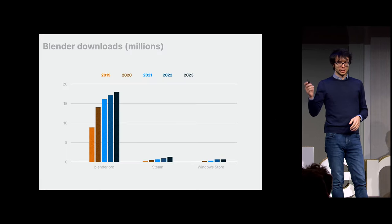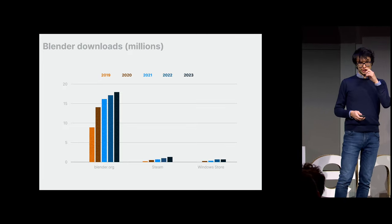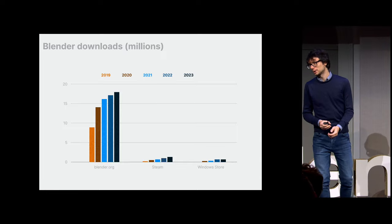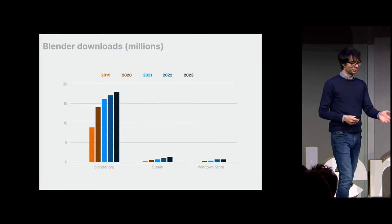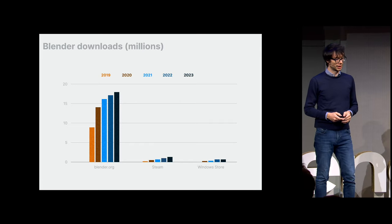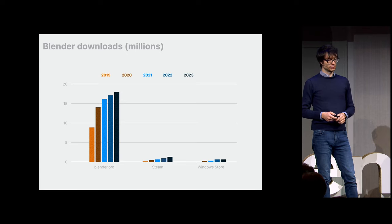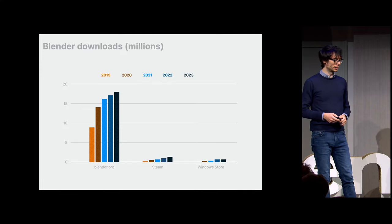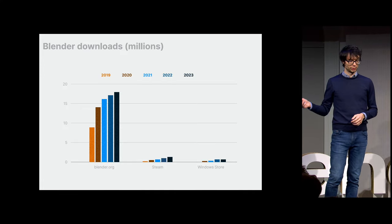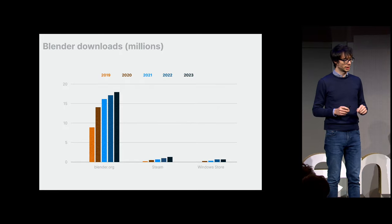Over time, these numbers pile up. This goes back to 2019 when Blender started to become actually popular. You can really see that from less than 10 million, it's going upwards and kicking up toward almost 20 million. You can see it divided by sources — we have the Blender website, Steam, and the Windows Store, with a couple of others that are too small to measure at this scale. Blender.org is still today the place where most people get Blender.